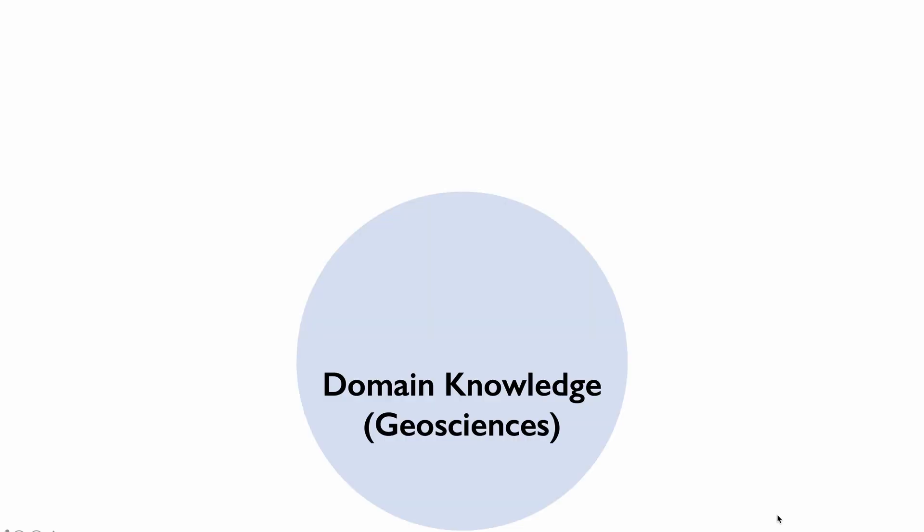Now is a good time to define exactly what we mean by data science and machine learning. Let's look at a Venn diagram. There are really three main components to what data science and machine learning are. First there is the domain knowledge, which in our case is geosciences.